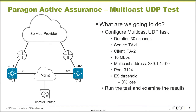Here is the topology. If you have seen any of the other Paragon Active Assurance learning bytes, this topology will look very familiar as it is the same. We have three main devices: TA1, TA2, and the control center. TA1 and TA2 use eth0 to connect to the management network, which allows connectivity with the control center, and they use eth1 to connect into the service provider network.